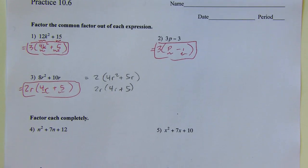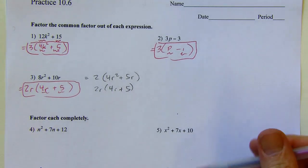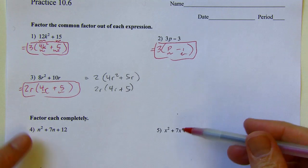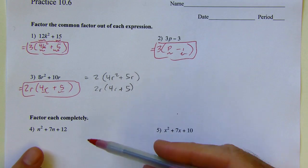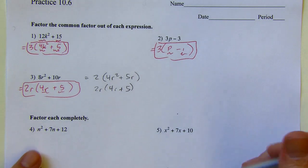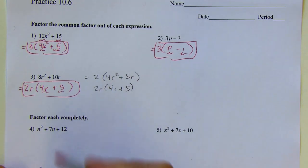You always want to check for common factors. On problems 4 through 9, there are no common factors, but you'd want to spot-check for that as you go. Now I'm factoring trinomials.